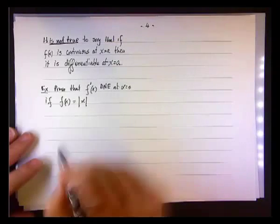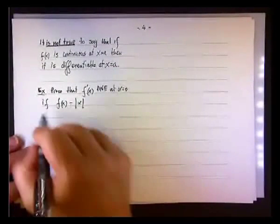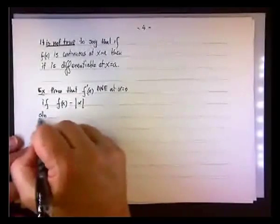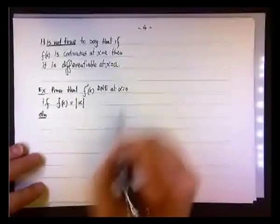Okay, so if f(x) equals the absolute value of x, we need to prove that the derivative does not exist at x equals 0.